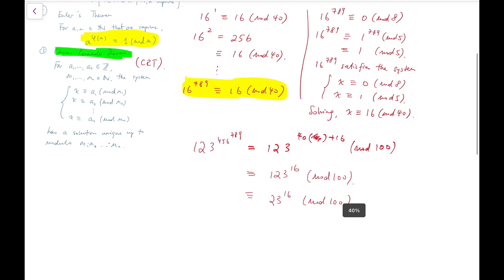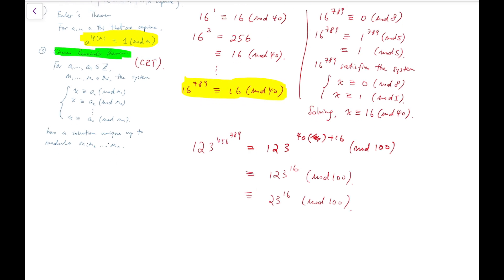Now to further compute this power mod 100, I'm again going to split it into two congruent equations and solve the system. So I'm going to split it into mod 4 and mod 25. The first one, for mod 4, 23 is congruent to -1 mod 4, which is congruent to 1 mod 4.